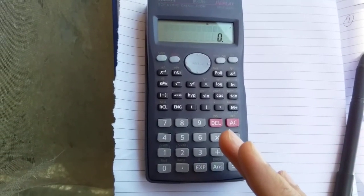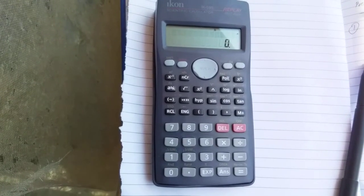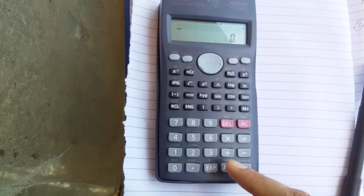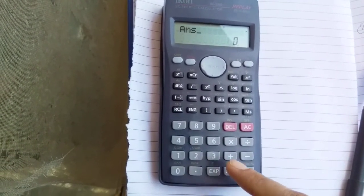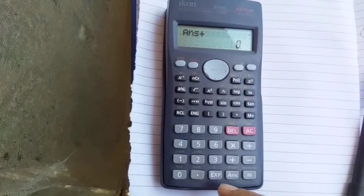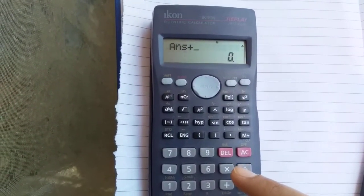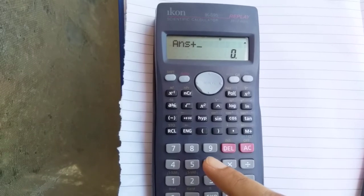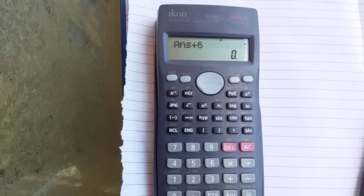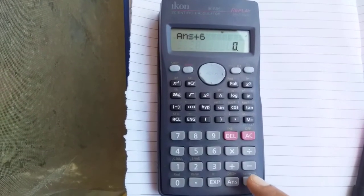Now what you have to do is, for example, you have to calculate the table for the value of 6. You have to press the ANS button, then you have to press plus, and then you have to press the value which you want to calculate the table for. For example, I want to calculate table for 6, so press 6. Then you have to press equals button.